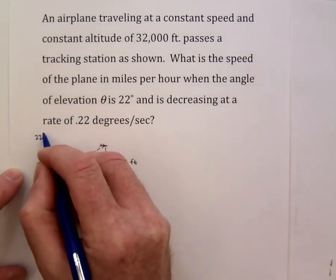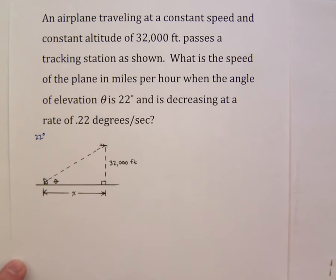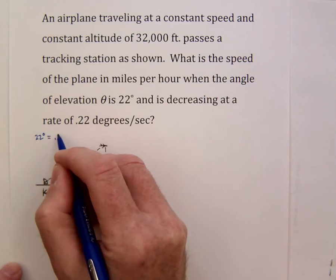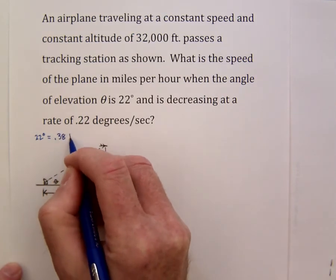For starters we should convert 22 degrees into radians and if you multiply by pi over 180 you find that's about 0.3840.